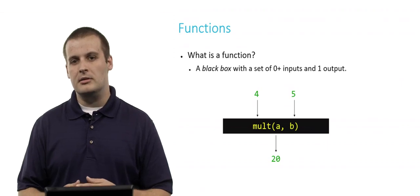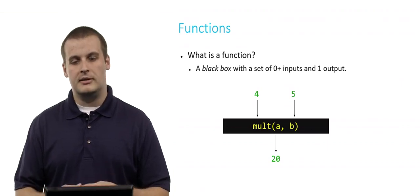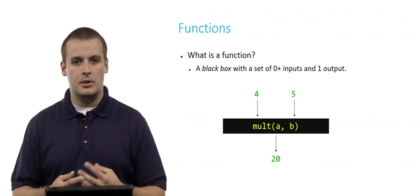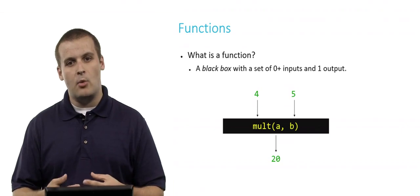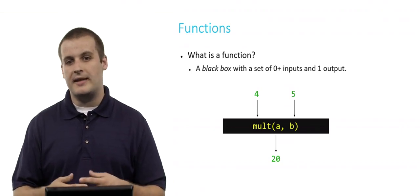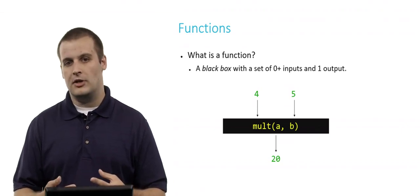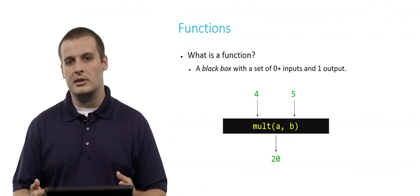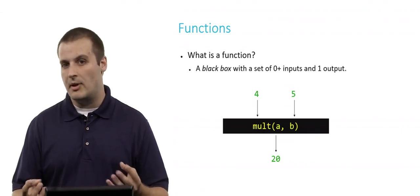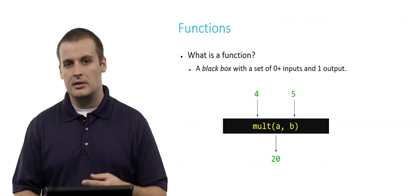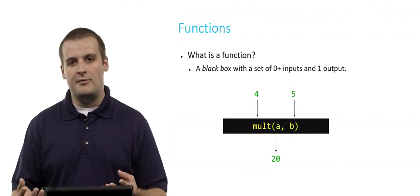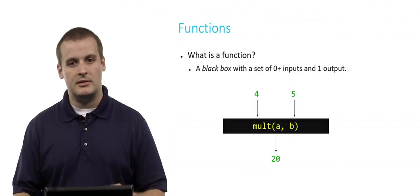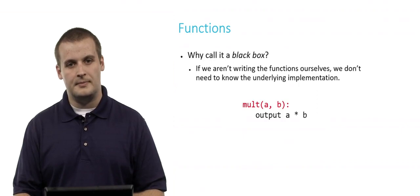Similarly, you have a function called mult that takes two inputs, a and b, and processes them such that the output of the function is the product of the two inputs multiplied together. Four and five being passed into mult — something happens — and the output we expect is 20.